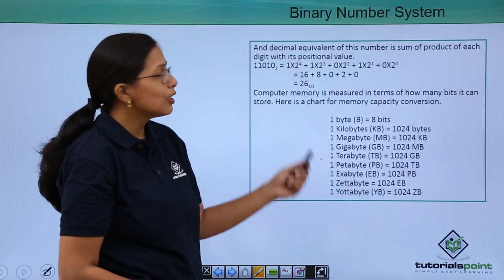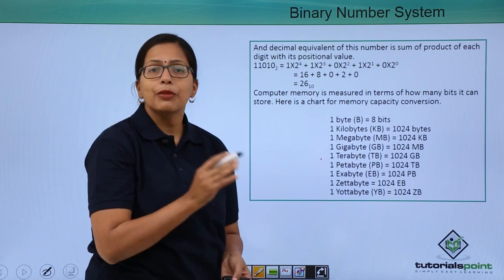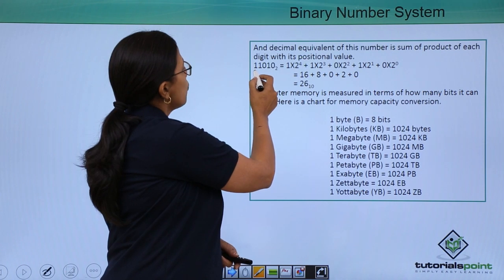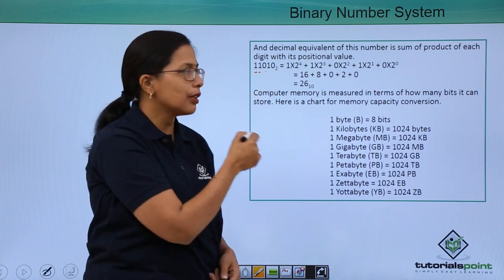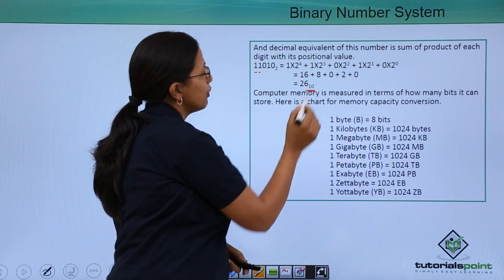Now, let's do a calculation and see how we can convert a binary number to decimal. This is 1, 1, 0, 1, 0 to the base of 2. This is a binary number system. How can we convert it into a decimal number system? That means to the base of 10.